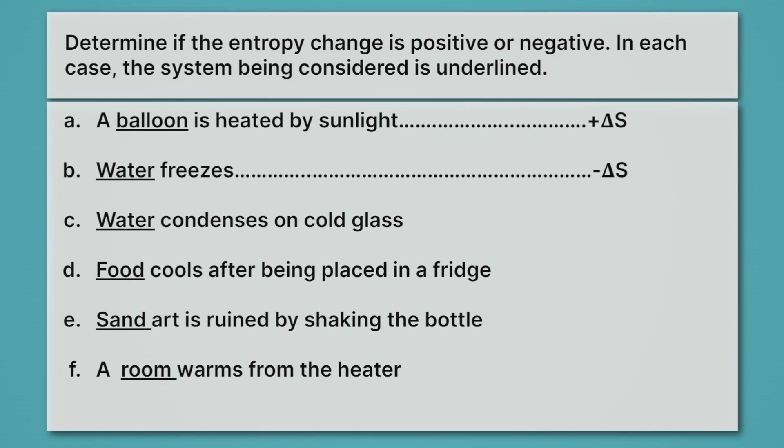And that means we're experiencing a decrease in entropy. Remember, that's not delta S of the universe — that's just delta S of the system. Delta S of the universe always has to be positive.